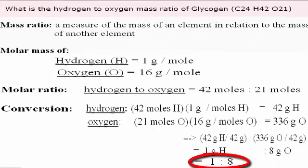So what is the hydrogen to oxygen mass ratio of glycogen? It is 1 to 8.